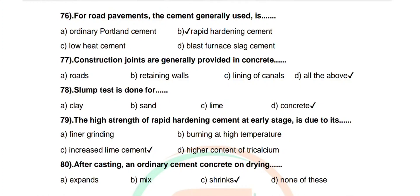Question 78: Slump test is done for — options: clay, sand, lime, concrete. Correct answer: concrete. Question 79: The high strength of rapid hardening cement at an early stage is due to — options: finer grinding, burning at high temperature, increased lime content, higher content of tricalcium silicate. Correct answer: increased lime content.